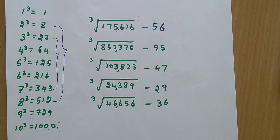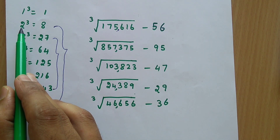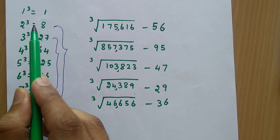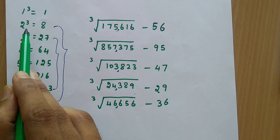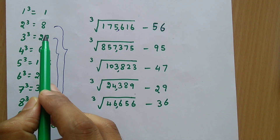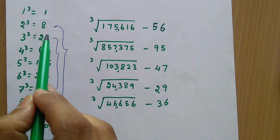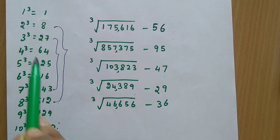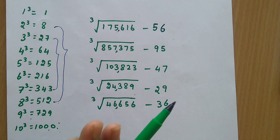The cube numbers have certain qualities. If the last digit is ending with 8, it means you have multiplied 2 three times. Example: 12 cube, the answer is 1728, so the last digit is 8, meaning you multiplied 2 three times. And if the last digit is 2, it represents you have multiplied 8 three times. So if the last digit is 8, please change it to 2. If the last digit is 2, change it to 8. Similarly, if the last digit is 7, you have to change it to 3. And if the last digit is 3, you have to change it to 7. This is the simple quality of the cube numbers.